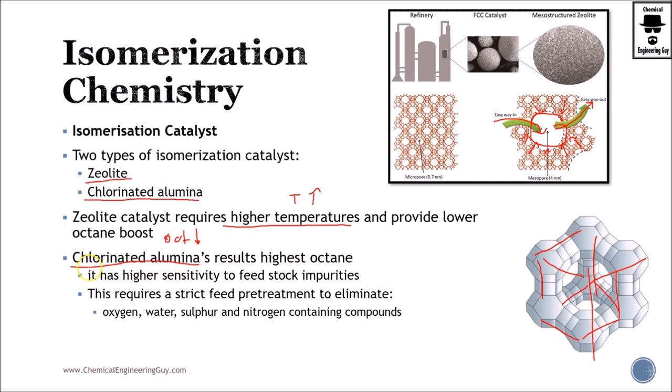On the other hand, chlorinated alumina will have a higher octane rating, doesn't need to operate at high temperature, higher sensitivity. But because of the same higher sensitivity, we are going to require to pretreat most of the feeds. So we need to remove oxygen, water, sulfur, nitrogen, and other metal containing compounds.